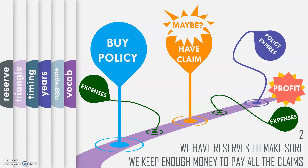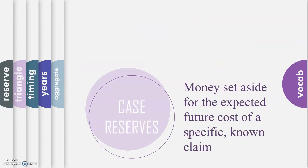But what we do have is reserves to make sure that we keep enough money to pay out all the claims. That is the actuary's job, and that is what we're going to talk about today — how we set reserves, or at least one reserving method, specifically the chain ladder or loss development method. Let's learn a little bit of vocabulary. I know this is starting to feel a little bit like school, but I promise you it's going to be so helpful. So write this down — these are important insurance terms.